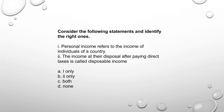Next: Consider the following statements and identify the right ones. Personal income refers to the income of individuals of a country — obviously, personal income is individual income. The income at the disposal after paying direct taxes is called disposable income. After paying income tax, the remaining is individual disposable income — both statements are correct, so option C.